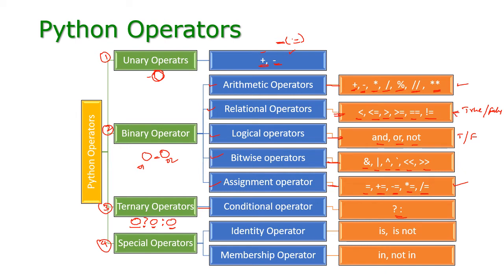And the special operators — we are having two special operators in Python. First one is identity operator. We are having two operators: 'is' and 'is not'. This operator is used to check the address of two objects. The next one is membership operator. We are having two: 'in' and 'not in'. These are used to check whether a given number is a member of a particular list or group of numbers.